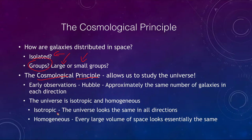The cosmological principle states that the universe is isotropic and homogeneous. Isotropic means that the universe looks the same in all directions. Homogeneous means that every large chunk of space looks essentially the same as another similarly sized area of space elsewhere in the universe.